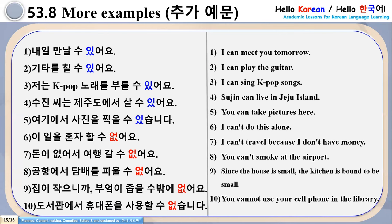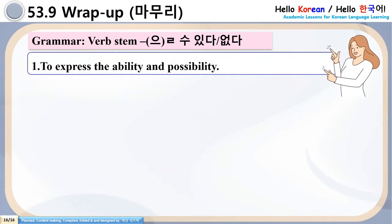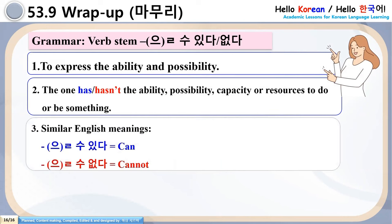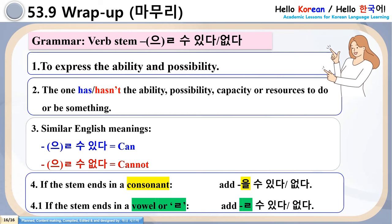You can write those sentences once. Now, to wrap up this lesson: the grammar is verb stem + Ulsu Itta or Opta. 1) To express ability and possibility. 2) The one has or has not the ability, possibility, capacity, or resources to do or be something. 3) Ulsu Itta = can, Ulsu Opta = cannot. Conjugation: if stem ends in consonant, add Ulsu Itta/Opta; if stem ends in vowel or lapaksim, add Ulsu Itta/Opta. We hope this grammar is now clear.